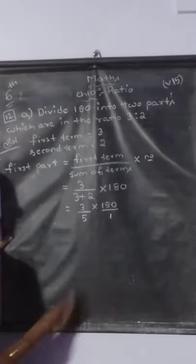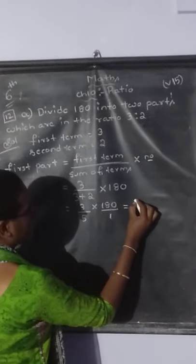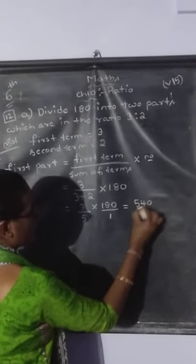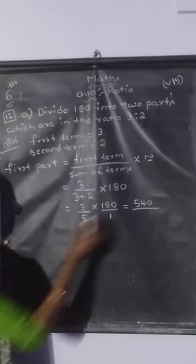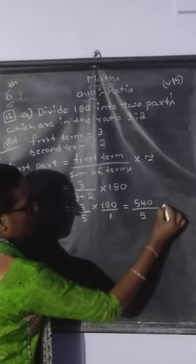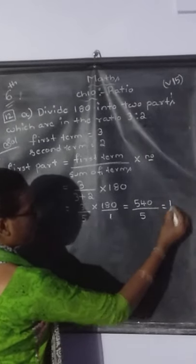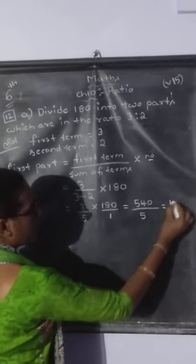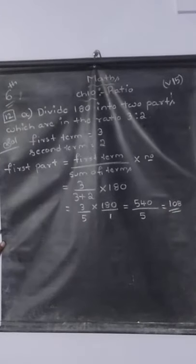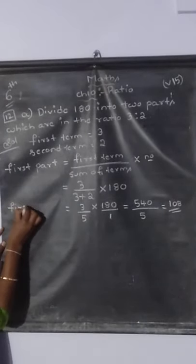So 3 divided by 5 into 180. 18 threes are 540, divided by 5. Do the division in the side work — I will write the direct answer. 5 ones are 5, 5 eights are 40. So the first part is 108.